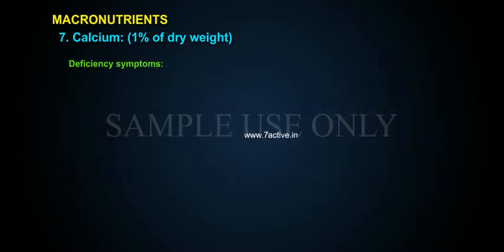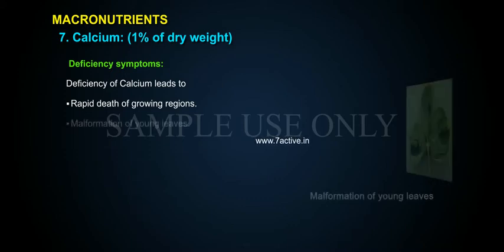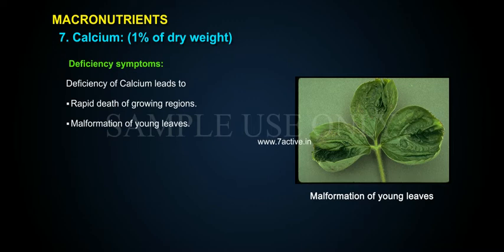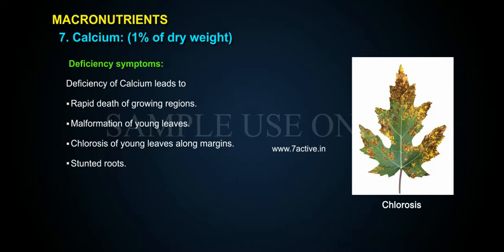Deficiency Symptoms: Deficiency of calcium leads to rapid death of growing regions, malformation of young leaves, chlorosis of young leaves along margins, stunted roots, and reduced flowering and fruiting.